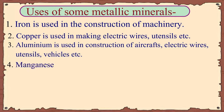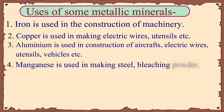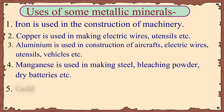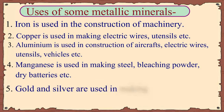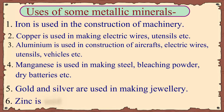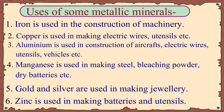Manganese is used in making steel, bleaching powder, dry batteries, etc. Gold and silver are used in making jewellery. Zinc is used in making batteries and utensils.